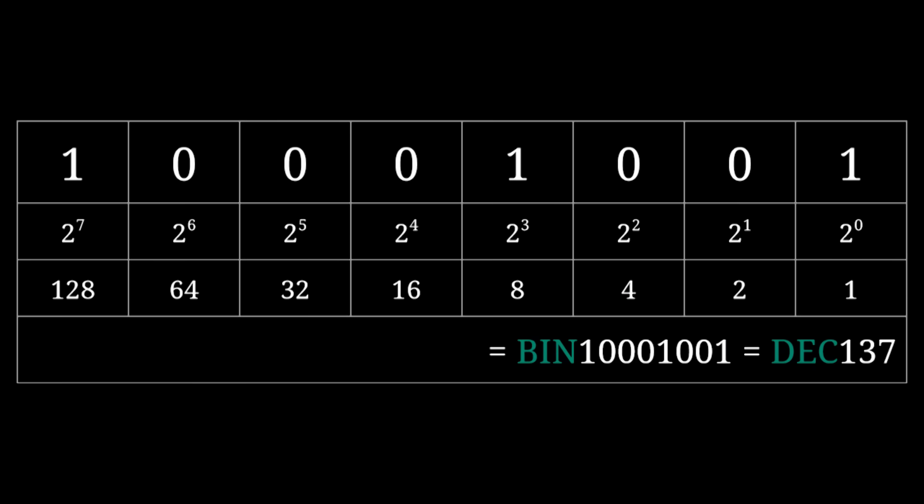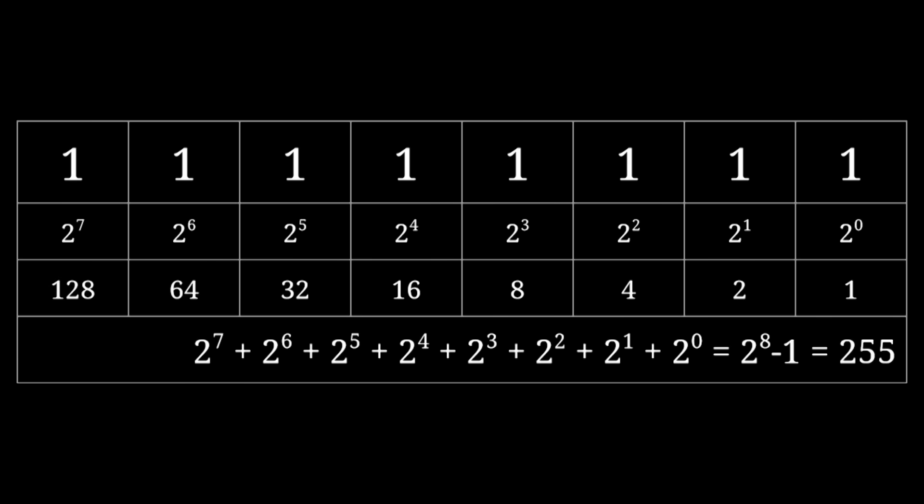The most common way to interpret this as a number is, well, to interpret it as a number, not in decimal of course, but in binary. Every position within the byte is associated with a specific power of 2. All you need to do is multiply each bit by the value of its position and add them all together. Using this system, one byte can represent any integer from zero, represented as eight zero bits, all the way up to 255, represented as eight one bits.